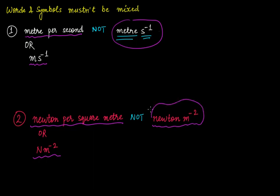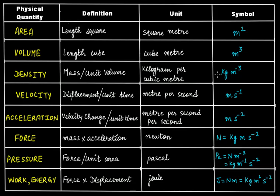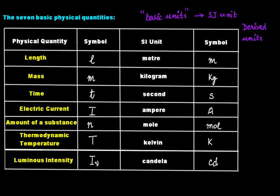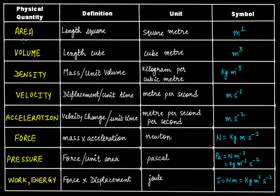So this is about derived units. Why are these called derived units? Because using the seven basic SI units, we have calculated the units of all these other physical quantities. That is why those seven units are called basic units — because using those seven basic units you can calculate the units of all the other remaining physical quantities.